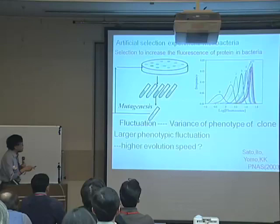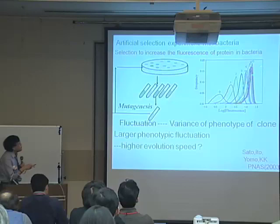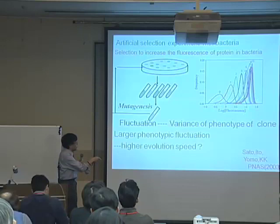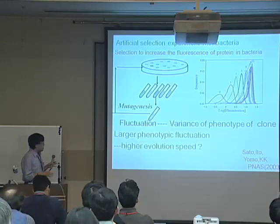The question is whether this fluctuation and evolution speed — the increase of fitness position — are related. It looks like as evolution progresses, this evolutionary step — the increase of fluorescence — decreased. And also, fluctuation decreased. So there seems to be some kind of correlation between the fluctuation of isogenic bacteria and evolution speed.